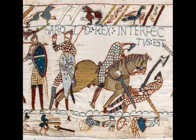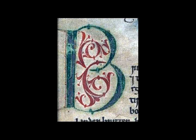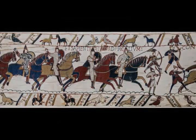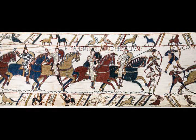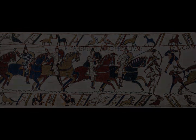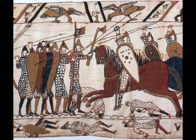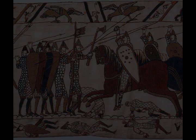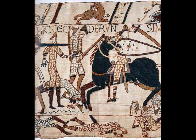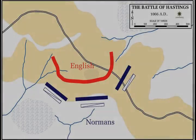The English army was organised along regional lines, with the fyrd, or local levy, serving under a local magnate, whether an earl, bishop, or sheriff. The fyrd was composed of men who owned their own land, and were equipped by their community to fulfil the king's demands for military forces. For every five hides, or units of land nominally capable of supporting one household, one man was supposed to serve. England could furnish about 14,000 men for the fyrd when it was called out. The fyrd usually served for two months, except in emergencies. It was rare for the whole national fyrd to be called out; between 1046 and 1065 it was only done three times, in 1051, 1052, and 1065.